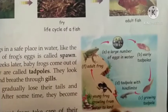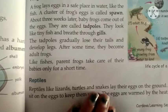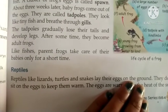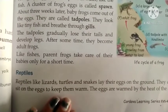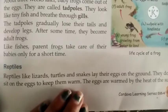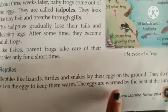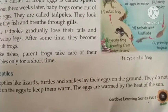The tadpoles stay in the water through each stage of development. This is the complete life cycle of frogs. Now moving on to reptiles: reptiles like lizards, turtles and snakes lay their eggs on the ground. The eggs are warmed by the heat of the sun.